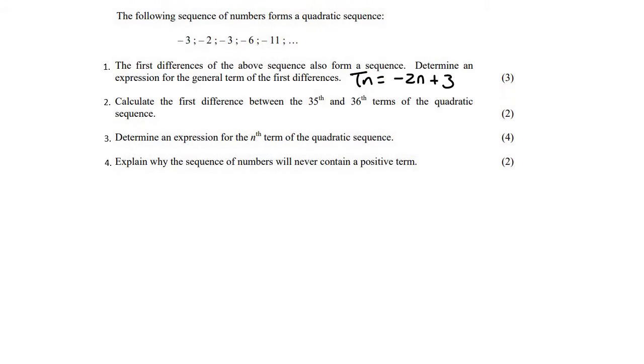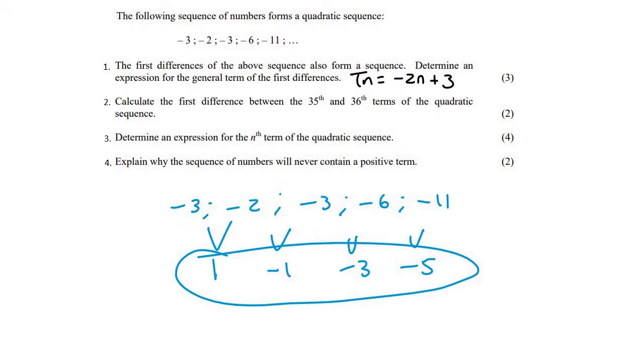Question two says calculate the first difference. Okay. So we know that the first difference is these numbers going down. So it's this one, this one, and this one. So it's these numbers. They're saying calculate the first difference number, which will be found between term 35 and term 36 in the quadratic pattern. So eventually, if this top sequence, the quadratic, had to carry on,